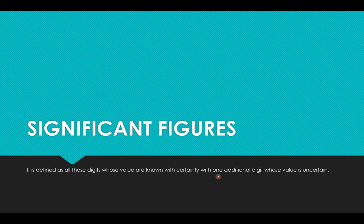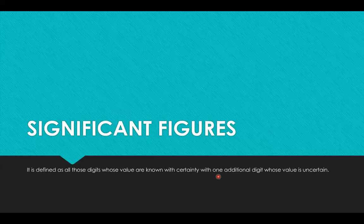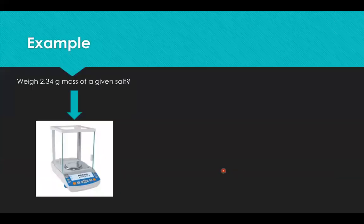So where do you find significant figures, and why are they so important? In analytical chemistry, significant figures are very important because the measurement you make depends upon what instruments you are using. It depends upon the precision of that particular instrument, so accordingly you will mention the digits in your measurement depending upon the precision of your instrument.